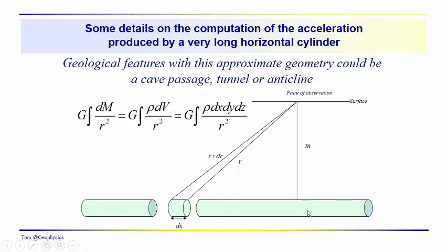If we had an anticline, a lot of the mass is concentrated along the axis of the anticline, so we could estimate the depth to the anticlinal core using a horizontal cylinder as an approximation. This is our geological application. The integral is expanded into Cartesian form: dx dy dz.